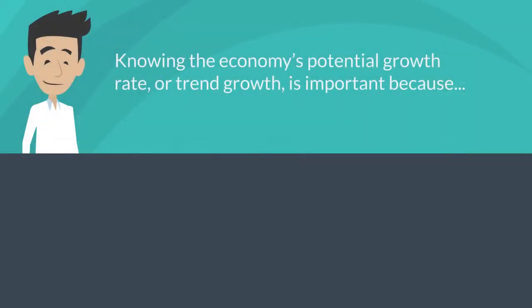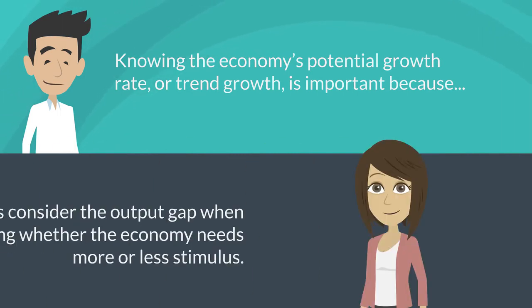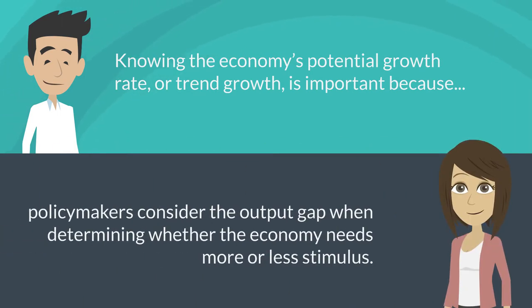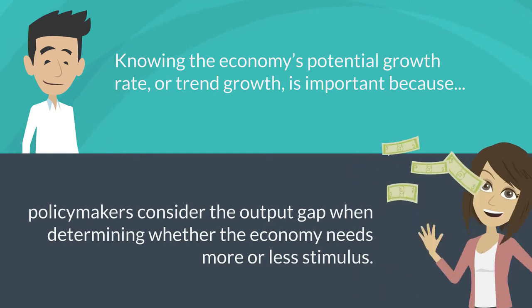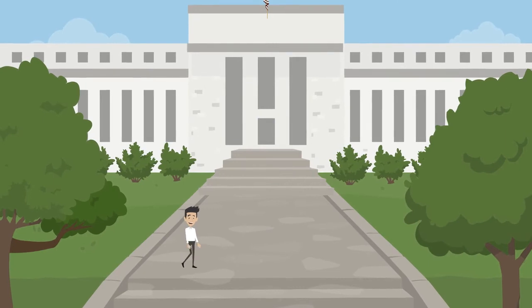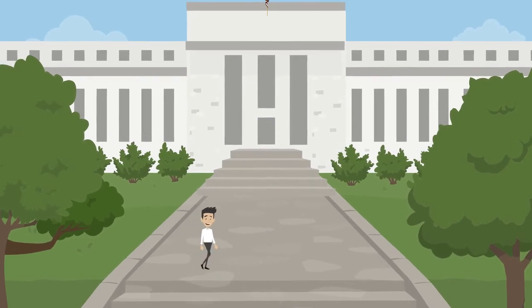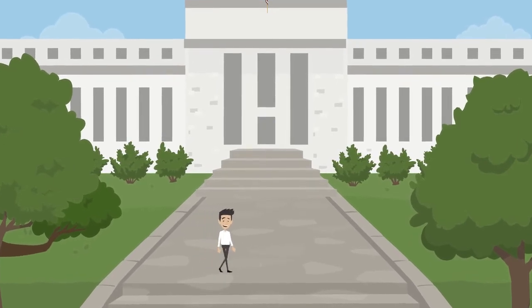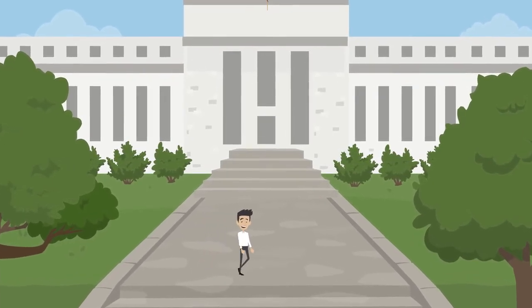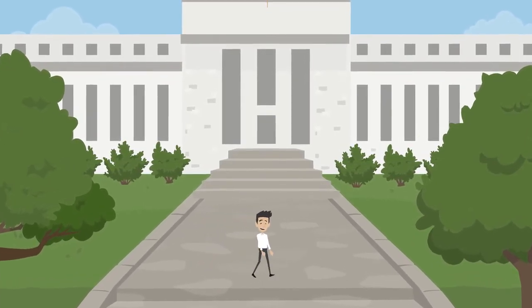Knowing the economy's potential growth rate, or trend growth, is important because policymakers consider the output gap when determining whether the economy needs more or less stimulus. For example, when the economy is experiencing a negative output gap, meaning growth is below its trend,